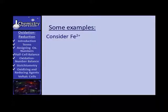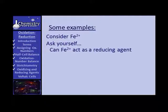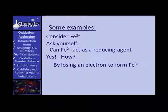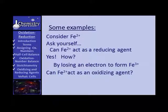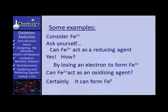Now consider the ferrous ion, Fe²⁺, and ask yourself — can the ferrous ion act as a reducing agent? Can it lose electrons? Yes it can, because it can lose an electron to form the ferric ion. Can the ferrous ion act as an oxidizing agent? Can it gain electrons? Certainly — it can form iron with a zero charge. Are you beginning to get the idea?